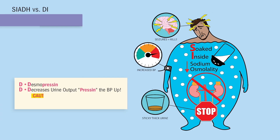Caution: headaches are a huge priority since ADH adds to H2O. Our labs end up low and liquidy, leading to hyponatremia — that low sodium below 135 — causing swelling in the brain, leading to seizures and then death. The big NCLEX keyword here is headaches, but also confusion or agitation. Usually those are the first signs of that low sodium, hyponatremia.